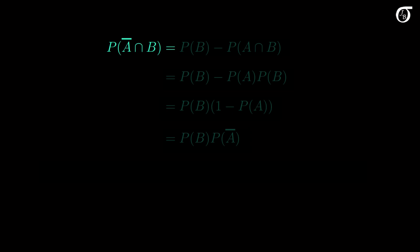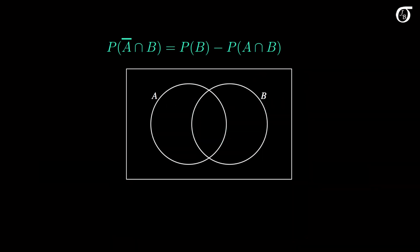It's simplest if we recognize that the probability of the intersection of A complement and B is the probability of B minus the probability of the intersection of A and B. To illustrate that, let's consider a Venn diagram, with the circle on the left representing event A, and the circle on the right representing event B. The overlap of the circles represents the intersection of A and B. The part of B outside of the intersection is the intersection of B with A complement — in other words, the intersection of B with everything outside of A.